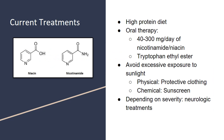Current treatments for Hartnup disease include a high-protein diet, which may help overcome the deficit of neutral amino acids. Patients also respond well to oral therapy with 40 to 300 milligrams per day of nicotinamide or niacin. Oral tryptophan ethyl ester — a lipid-soluble form of tryptophan — has been shown to increase serum tryptophan and reverse clinical symptoms. Patients are recommended to avoid excessive sun exposure, using protective clothing and sunscreen. Some patients may require mental health treatment such as antidepressants or mood stabilizers.